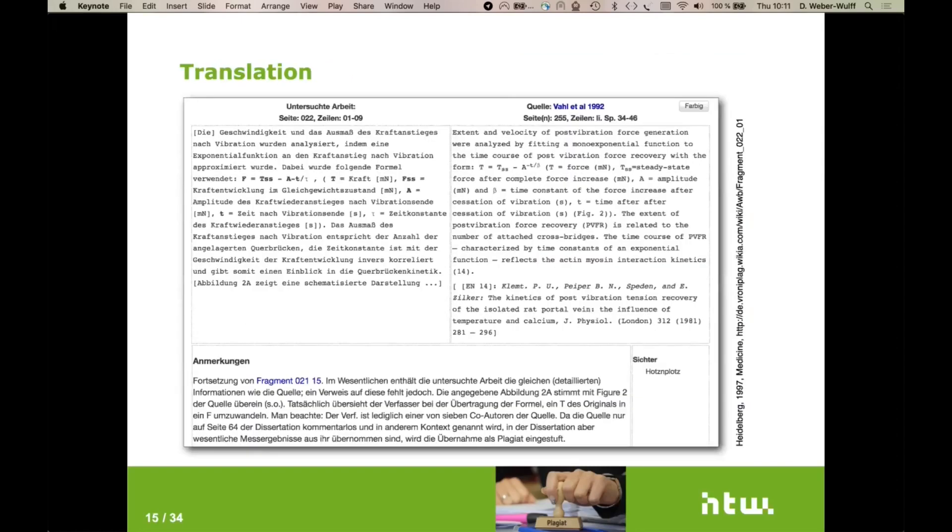Then we have something that software can't do anything about. And this is translation plagiarism. That is, somebody takes a source that is in some other language, in this case English, and translates it into German. Now the interesting thing to observe here is that in this thesis, and this is a habilitation that is based on another habilitation, you see this wonderfully mathematical formula. When you do a copy and paste from PDF, what happens is all the formatting information of the subscripts and the superscripts disappear. And so you end up with a really strange formula like this.